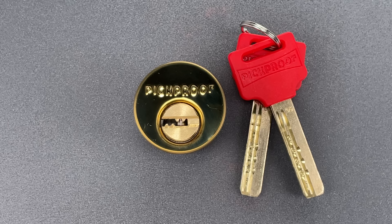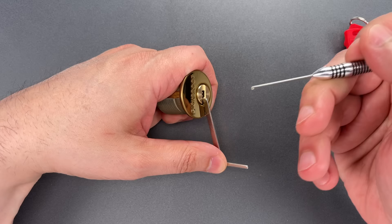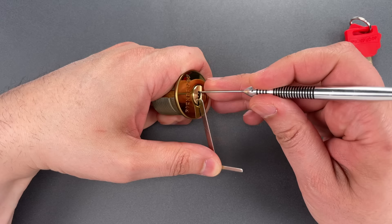Let's see what it takes to pick this open, and then I'll take it apart and show you what's inside. I'm going to use this Z-bar as a turning tool, and to lift the pins, I'm going to use this flag from Multipick.